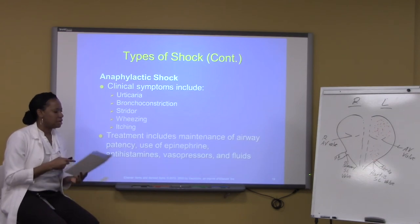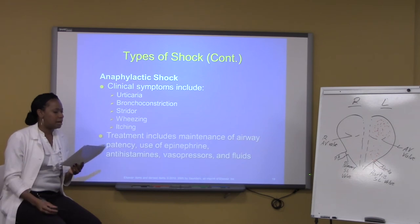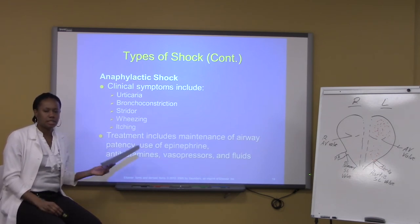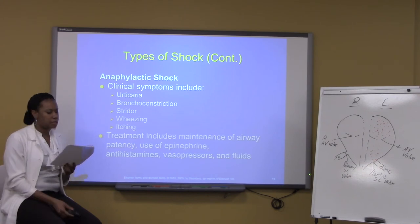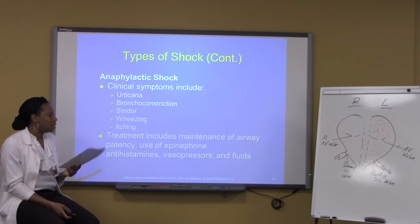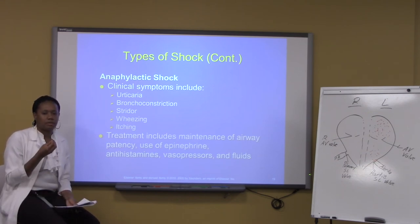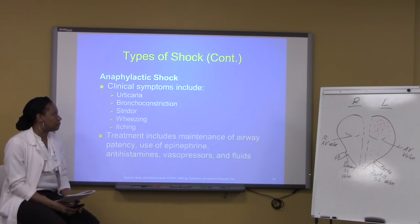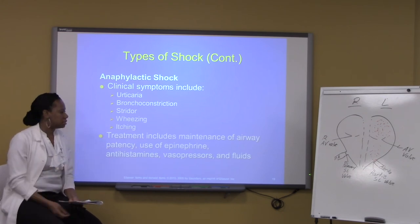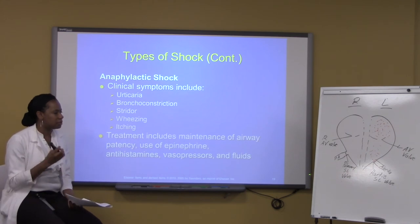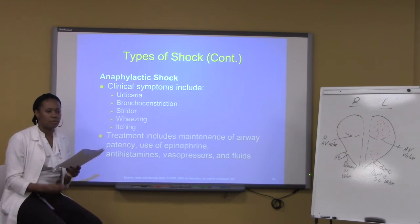Other symptoms of anaphylactic shock include bronchoconstriction — which can cause respiratory distress — stridor (noisy breathing), wheezing, and itching along with the hives. Patients can also have an increase in heart rate and an increase in respiratory rate. Treatment involves opening up the airway; epinephrine is used to stop the vasodilation, the EpiPen being most commonly used. Antihistamines can also suppress the inflammatory response, along with vasopressors and fluids to help with volume loss.